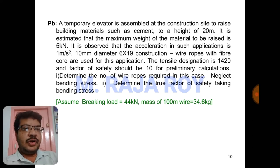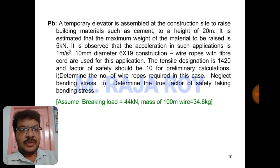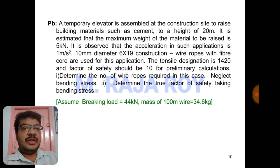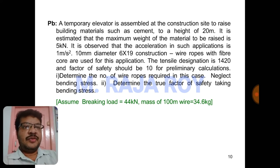The tensile designation is 1420 and the factor of safety should be 10 for preliminary calculations. Tensile designation 1420 means the ultimate tensile strength is equal to 1420 N per mm square. Factor of safety is 10 and braking load is 44 kN. From the braking load and factor of safety we can get the working load, since factor of safety equals braking load divided by working load.